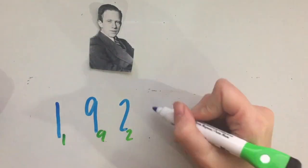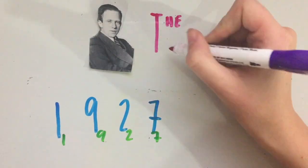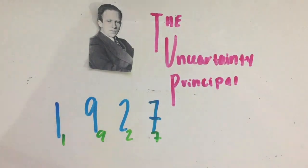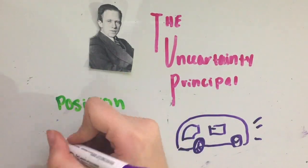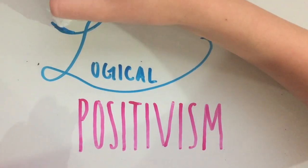The second is the Uncertainty Principle, which was developed by Werner Heisenberg in 1927, that states that position and velocity can't be measured at the same time. And last but not least, Logical Positivism.